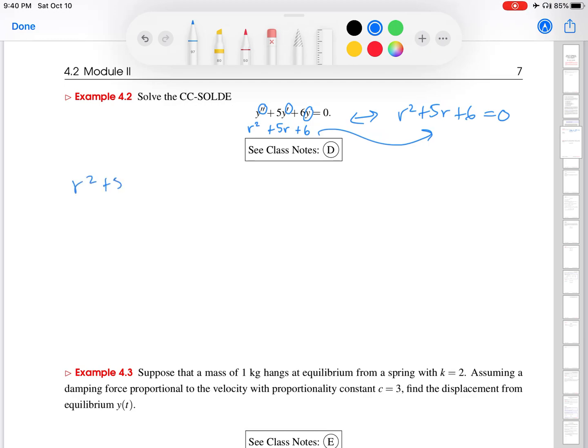Our job now is to solve this characteristic equation to find the r values. This one happens to factor into r plus 2 times r plus 3. And so we get two solutions: negative 2 and negative 3.